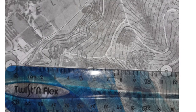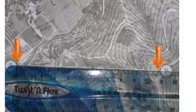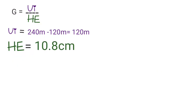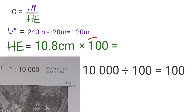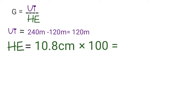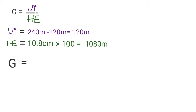To get the horizontal equivalence, use your ruler to measure the two points, then convert to meters using the map scale. From the two points I get 10.8 centimeters. Multiply 10.8 centimeters by 100 — we get 100 from the map scale: 10,000 divided by 100 equals 100. Therefore 10.8 centimeters times 100 gives you 1080 meters.